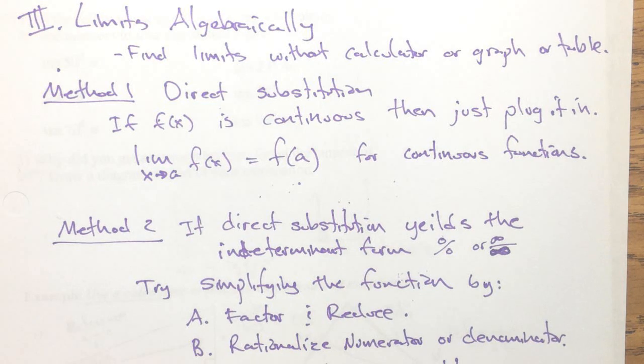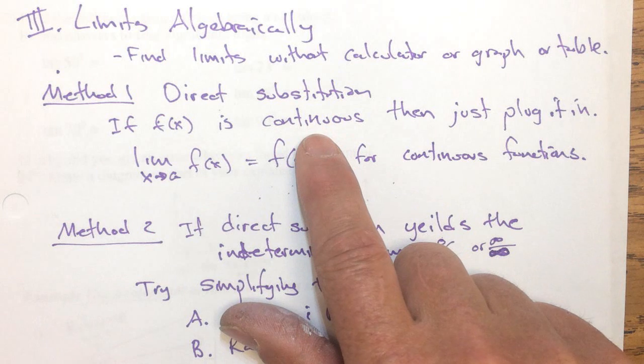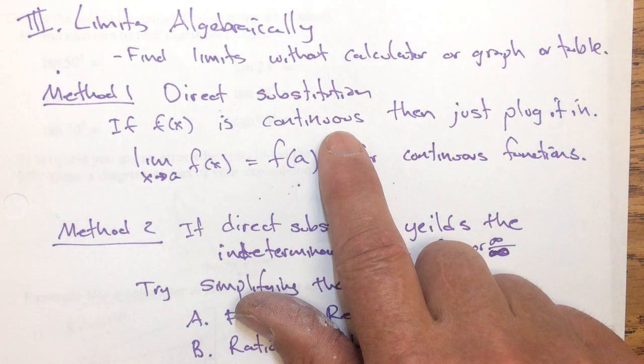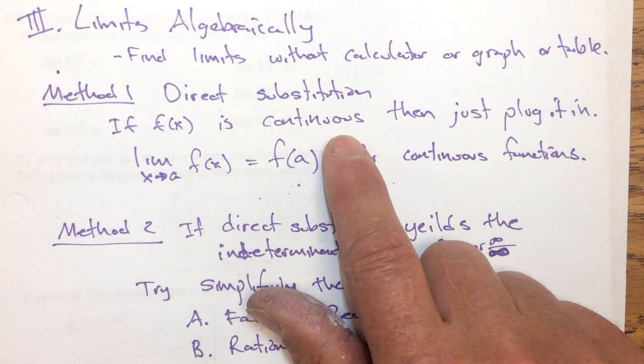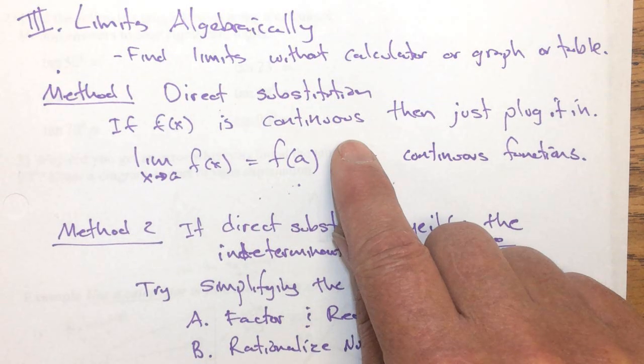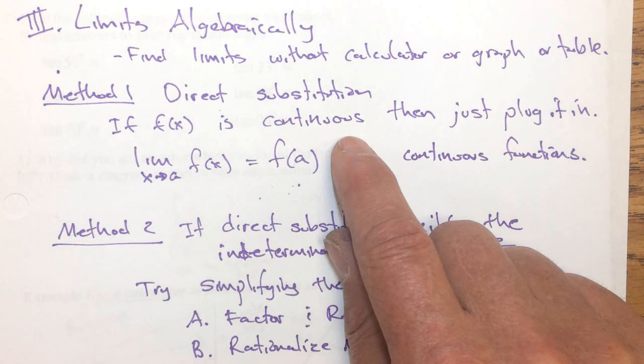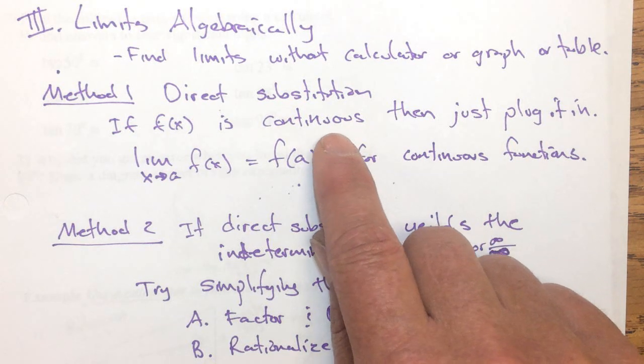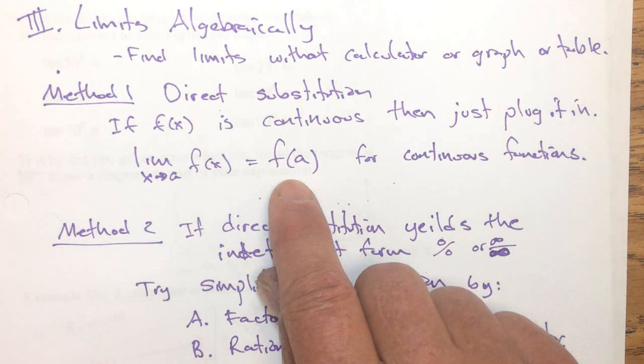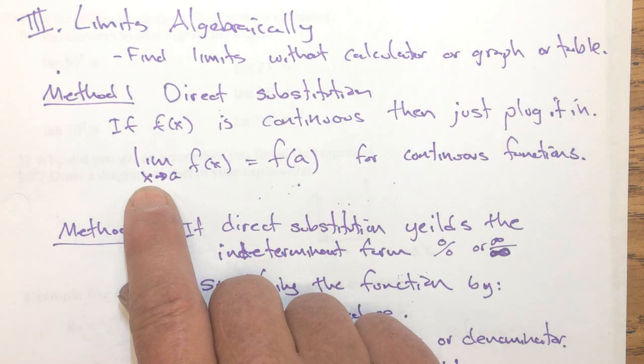This works for continuous functions. And we know that we're going to have a continuous function if it's any function that's defined algebraically. If there's an asymptote, though, we can pretty much identify a zero in the denominator, but not in the numerator. And so, in that case, direct substitution is still working because if we get undefined, like three divided by zero is infinity or not defined, then we could get an answer from this just plugging it into the function.